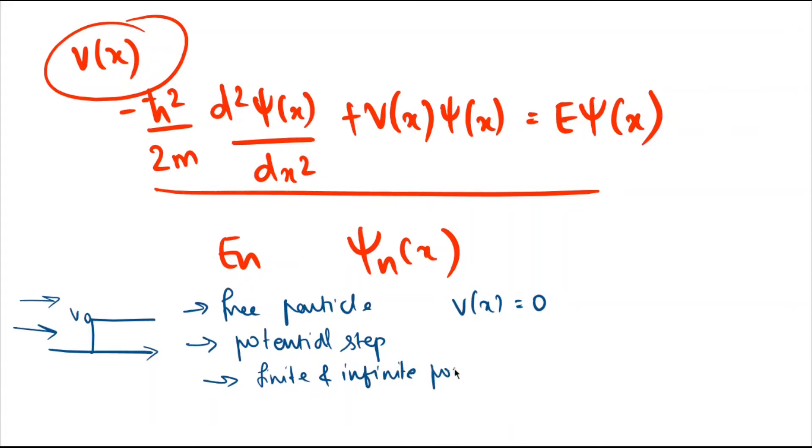As the name suggests, a finite well may look like this for some finite potential V0, and the particle might be coming from here. For infinite potential well, the walls will have infinite potential.